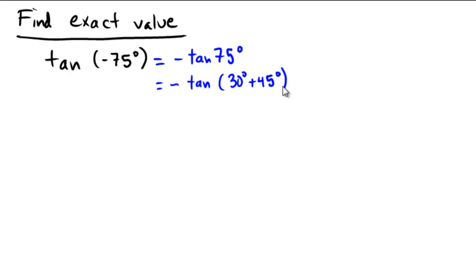Now with those two numbers, I can use my tangent angle sum formula to get that this is the same as the negative of, and the numerator will have tangent of 30 degrees plus tangent of 45 degrees over 1 minus tangent of 30 degrees multiplied by tangent of 45 degrees. Excellent.